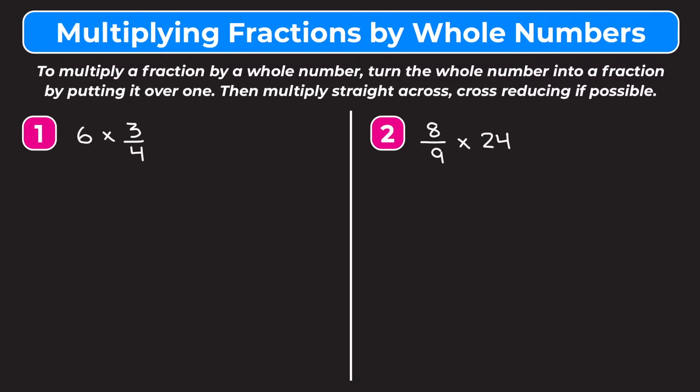Example one is six times three-fourths. We need to change six into a fraction — the easiest way is to put it over one. So six is equal to six over one, meaning we really have six over one times three over four.